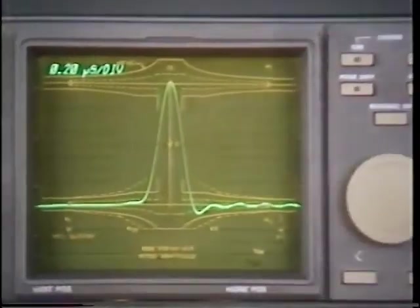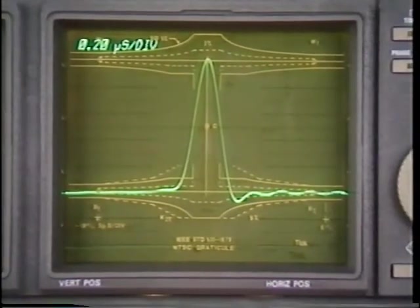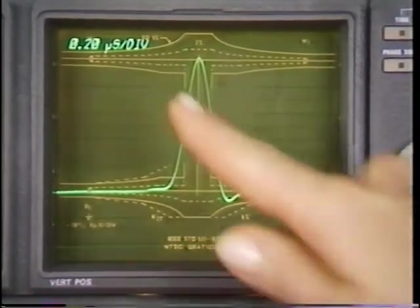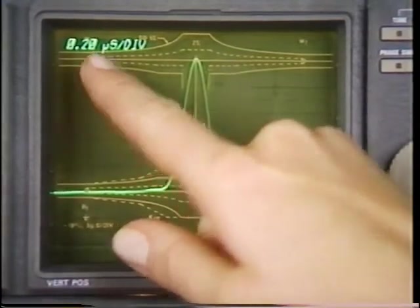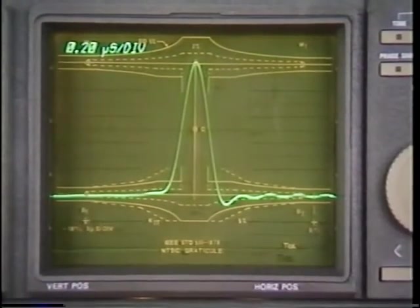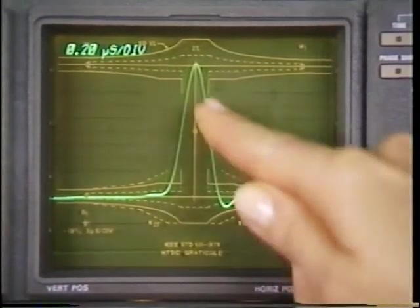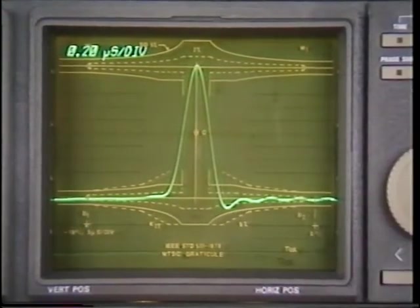To make a measurement with this graticule, first make sure that you have a 2T pulse, and then normalize the pulse height to fit the graticule. Set the horizontal magnification to 0.2 microseconds per division, and position the pulse horizontally so that it fits into the little circle at the top. You can obtain a reading by observing where the waveform falls with respect to the graticule.